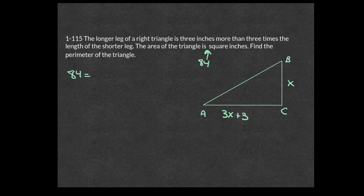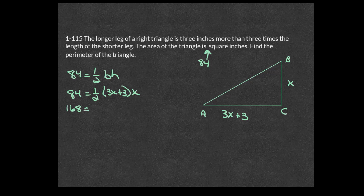Plugging in the legs: 84 equals one-half times (3x plus 3) times x. Multiply both sides by 2 to eliminate the fraction: 168 equals (3x plus 3) times x. Distributing gives 3x squared plus 3x equals 168. This turns into a quadratic equation, so subtract 168 from each side.